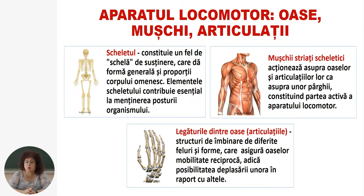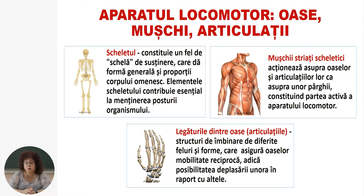Scheletul constituie un fel de schelă de susținere care dă formă generală și proporții corpului omenesc. Scheletul uman conține 206 oase. Elementele scheletului contribuie esențial la menținerea posturii organismului. Mușchii striați scheletici acționează asupra oaselor și articulațiilor ca asupra unor pârghii, constituind partea activă a aparatului locomotor, cum vedeți în imagine.